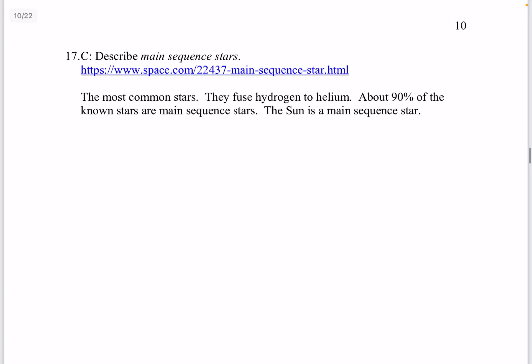Question 17. Describe main sequence stars. These are the most common stars. They fuse hydrogen to helium. About 90% of the known stars are main sequence stars. The sun is a main sequence star.